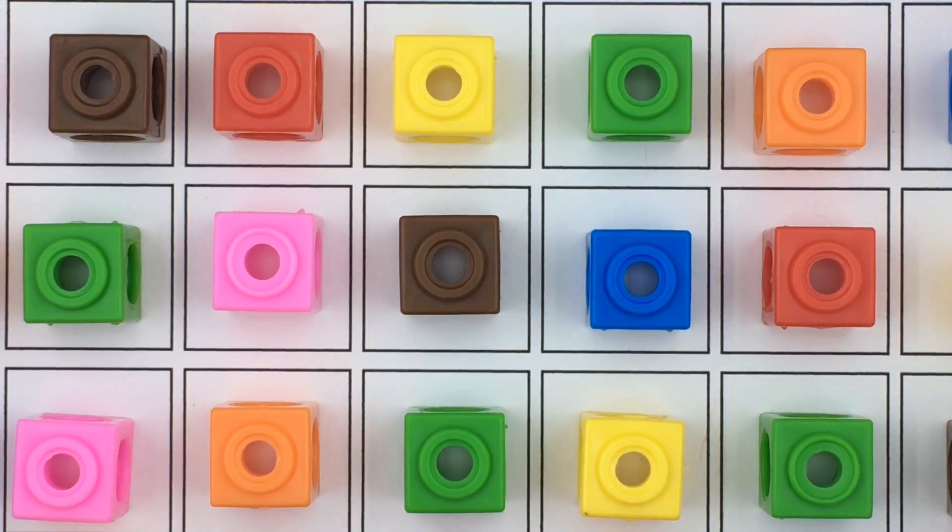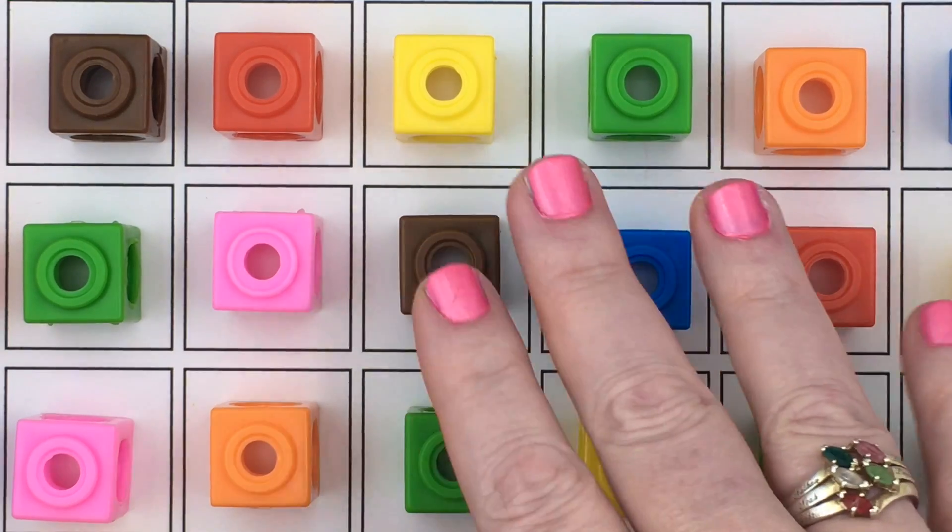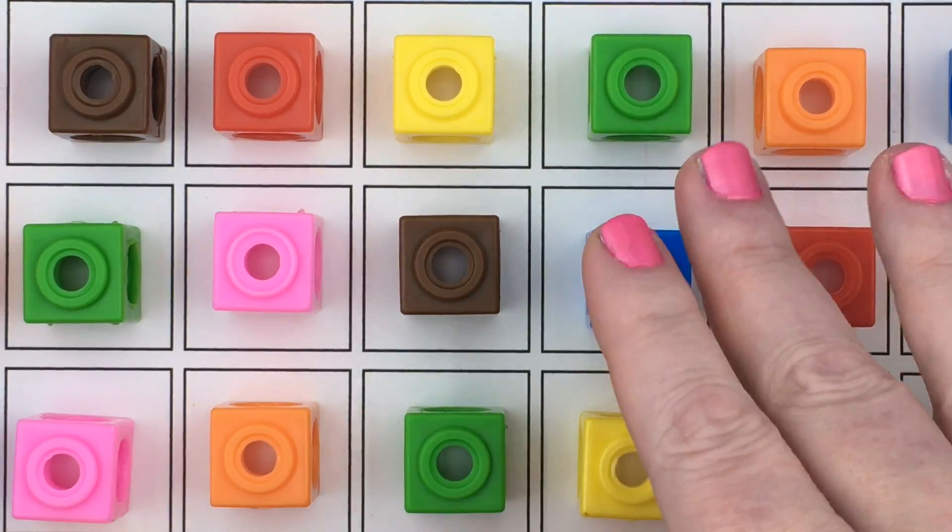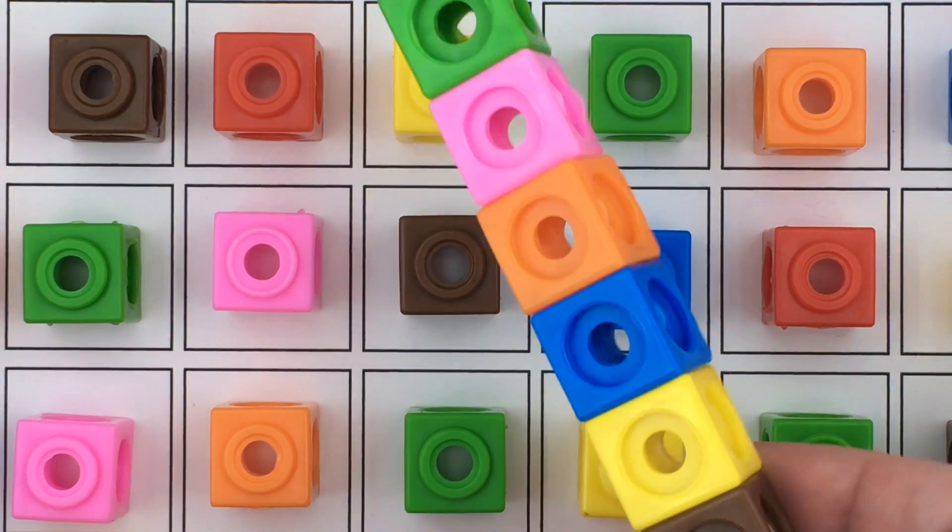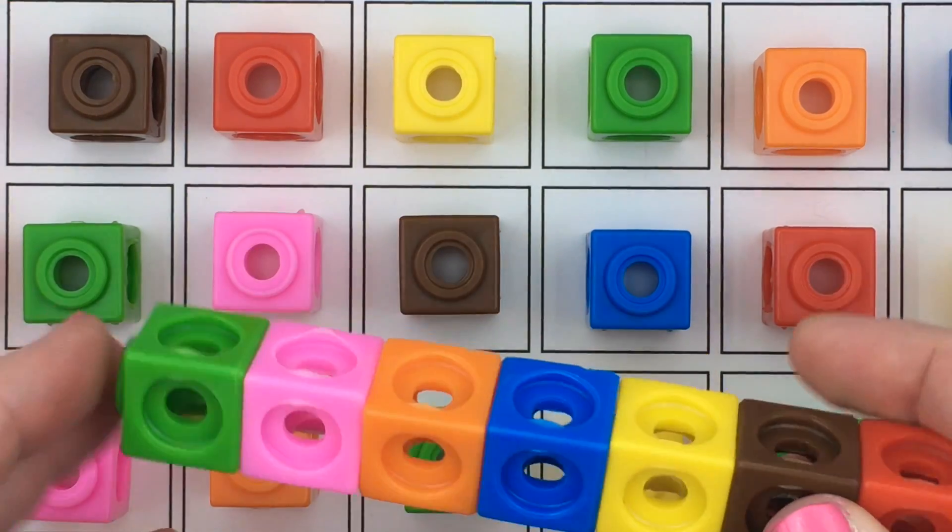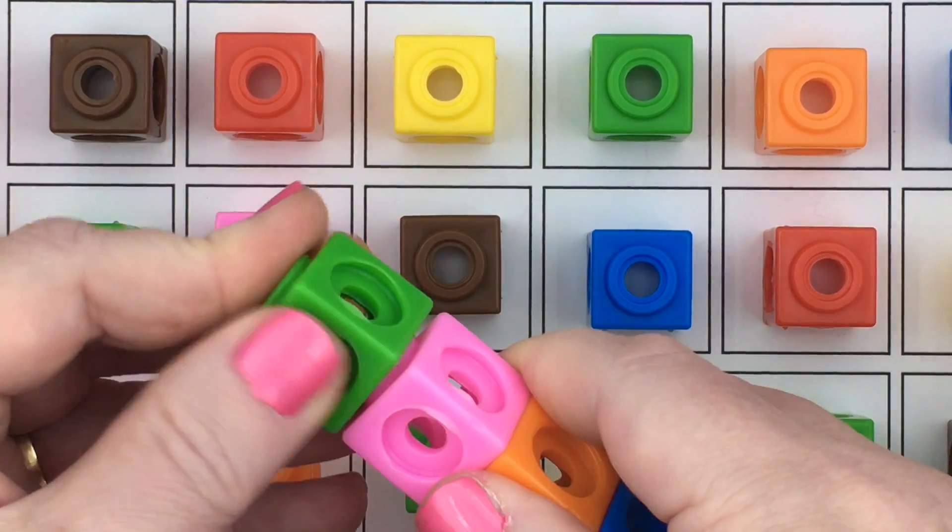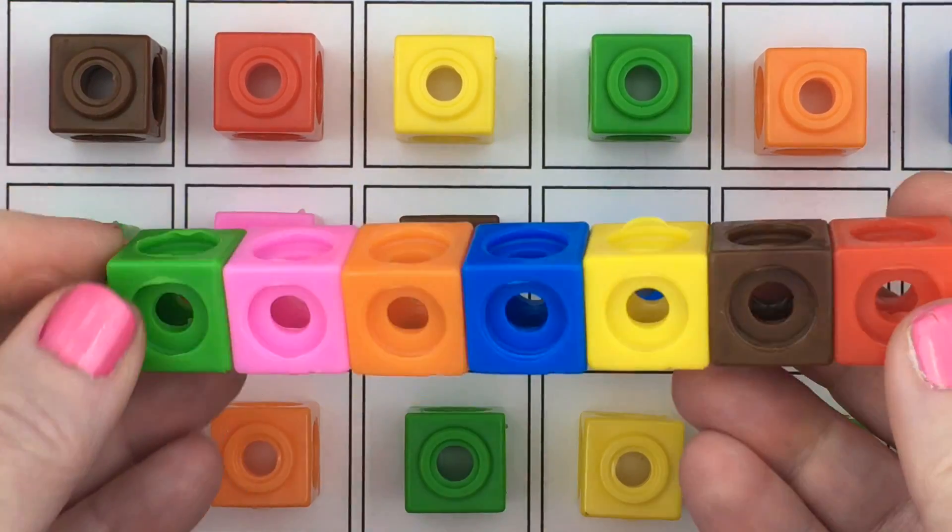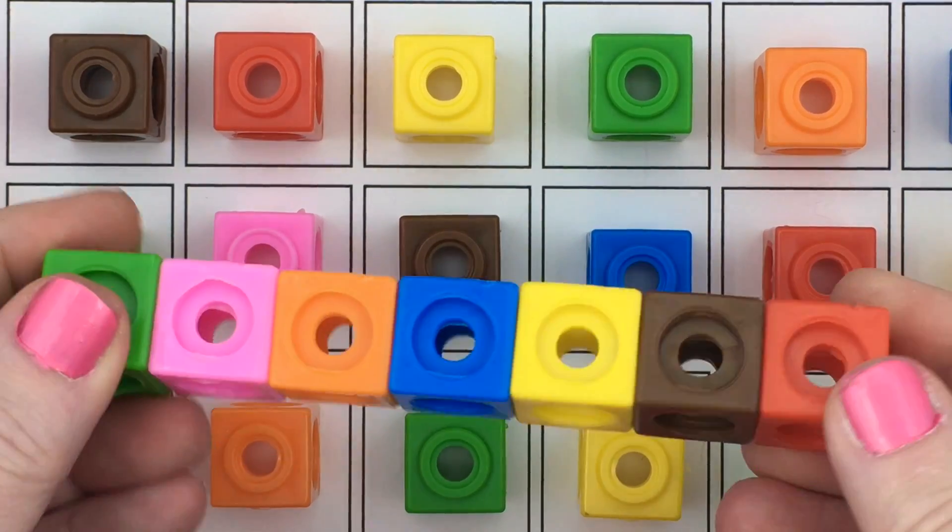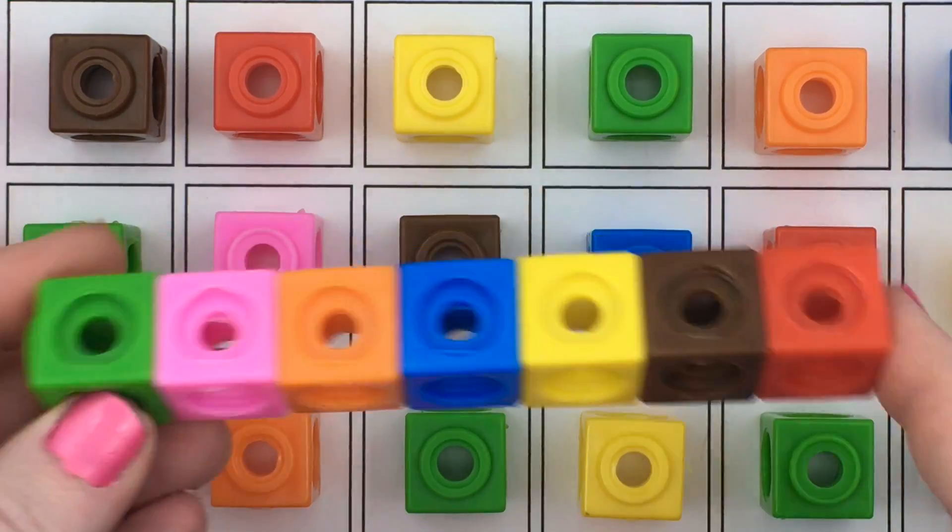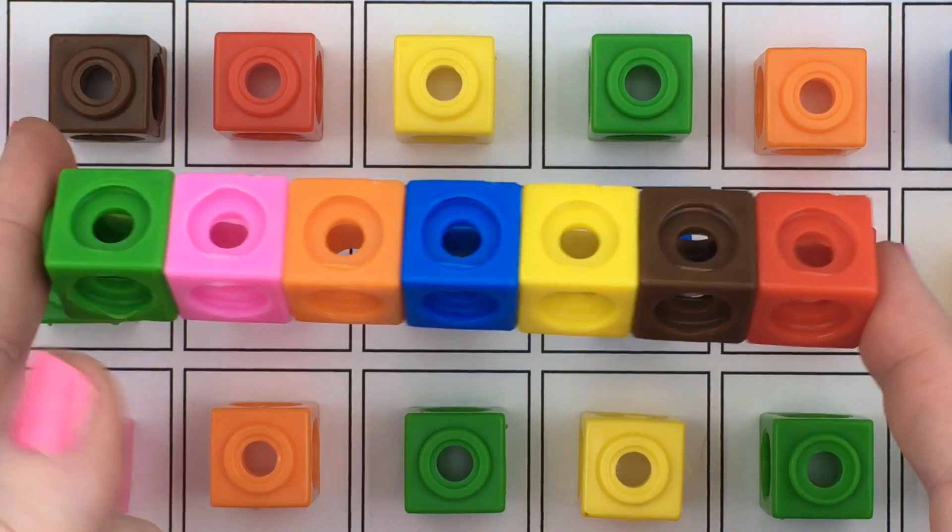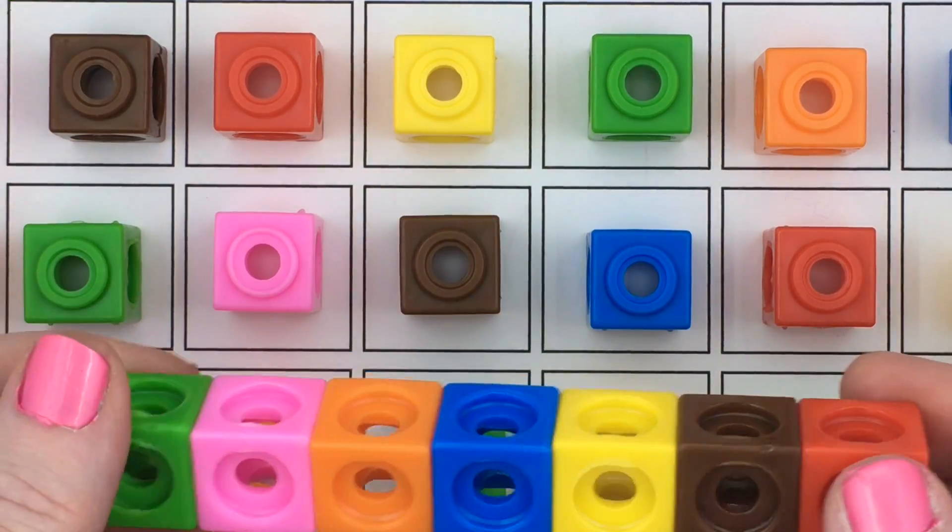A second manipulative that we like to use with our roll and count mats are unifix or math link cubes. These are simply cubes that link together with a little lip on them, and you can put them in any of the spots. For this purpose, we build five links of seven different colors to have ready when we start to roll the dice.